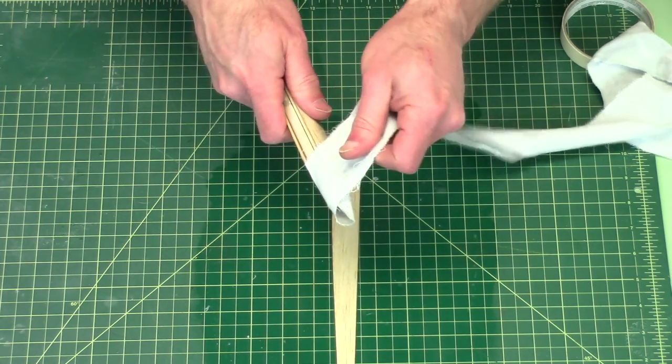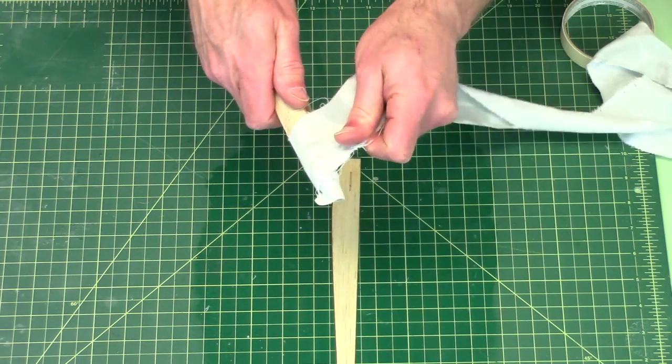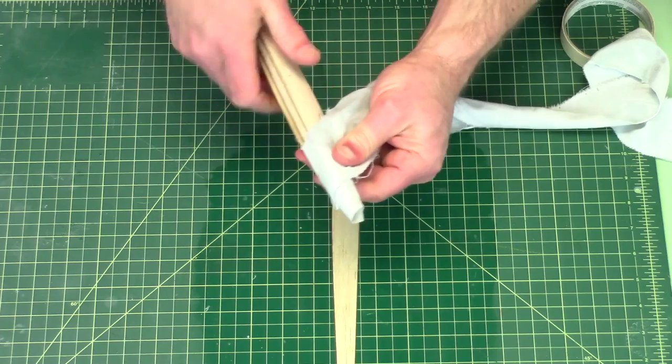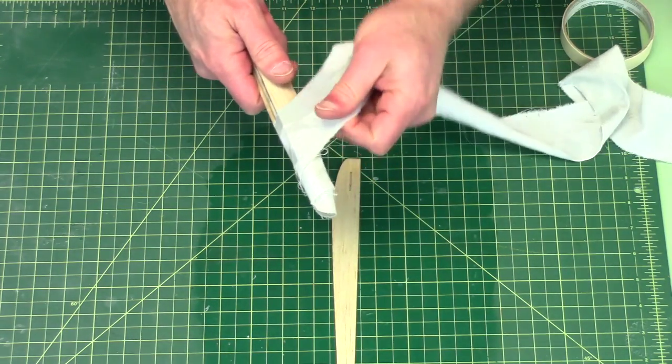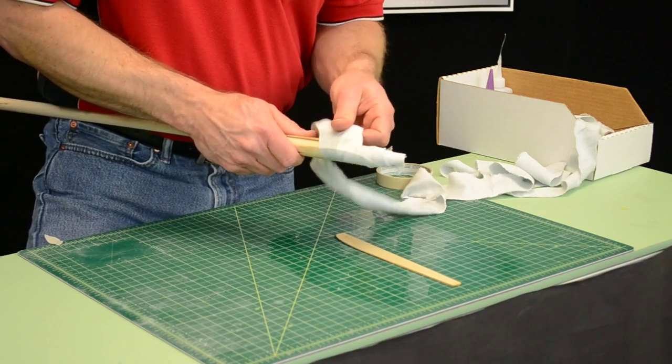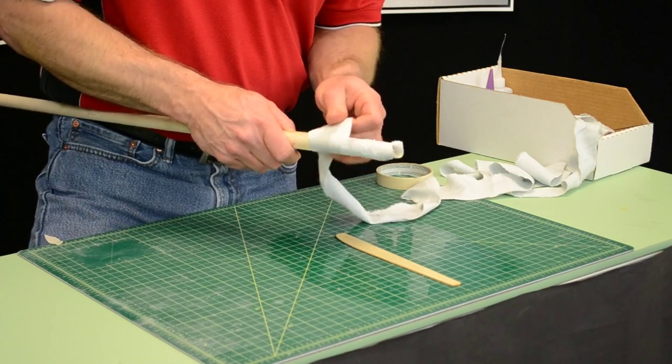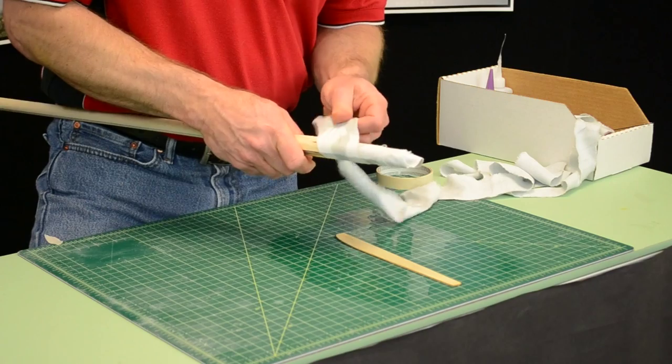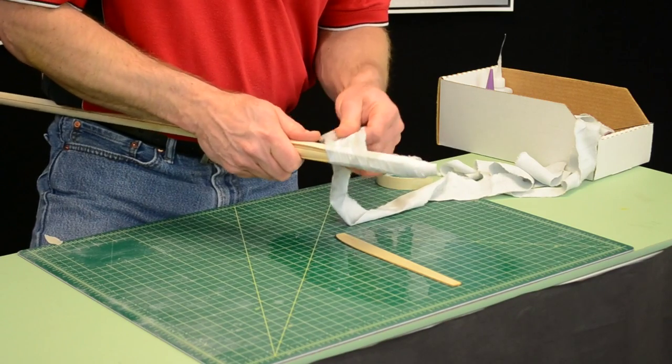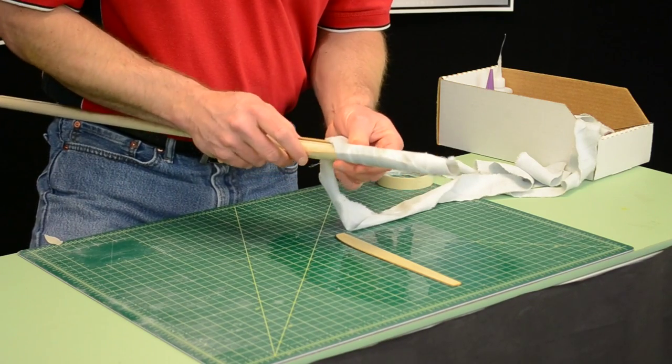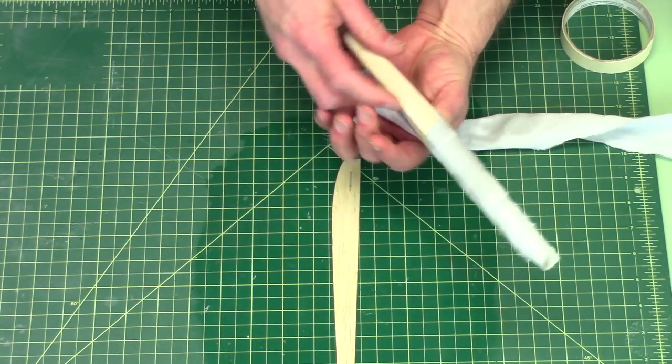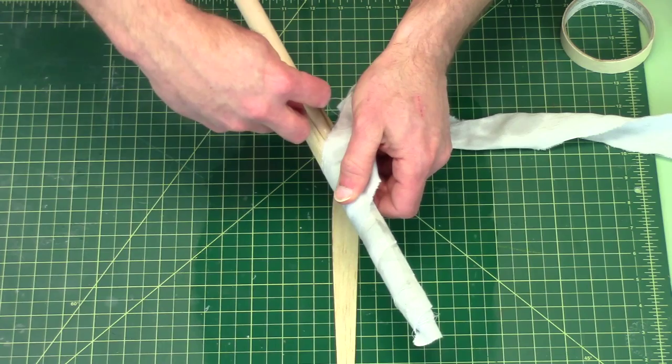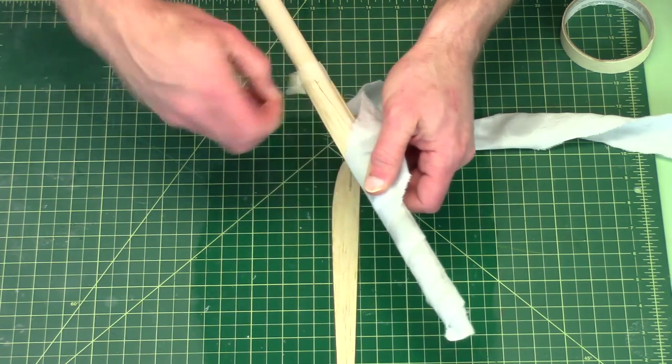It does help to have an assistant with this to make sure that you're laying it flat. Always keep checking make sure that you're straight along the tube and at this point I can remove the bottom one.